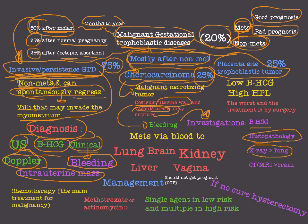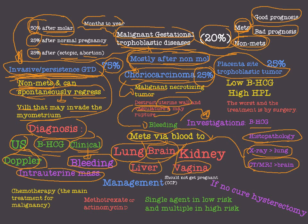We also perform chest X-ray for the lungs and CT scan or MRI for the brain, because choriocarcinoma is frequently metastatic, in contrast to the invasive type. Metastatic sites include the lung (most common), the brain, the liver, the vagina (forming a strawberry-like appearance), and the kidney. The most important sites are the lung, brain, and liver. Metastasis occurs through the blood — hematogenous spread.